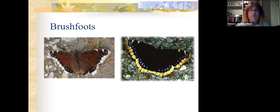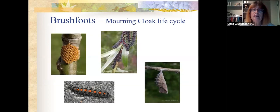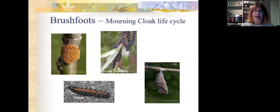Here's the mourning cloak life cycle. They lay their eggs in a collar around a small twig and hatch into bristly caterpillars that unfortunately can look like gypsy moth caterpillars. So don't go smashing caterpillars until you've well identified them. Their chrysalis looks like a dead leaf, so that's something we can look for as well.